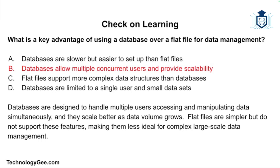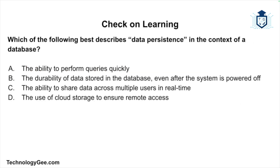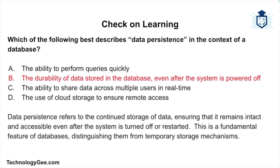Final question: which of the following best describes data persistence in the context of a database? Is it the ability to perform queries quickly, the durability of data stored in the database even after the system is powered off, the ability to share data across multiple users in real time, or the use of cloud storage to ensure remote access? The correct answer is the durability of data stored in the database even after the system is powered off. Data persistence refers to the continued storage of data, ensuring it remains intact and accessible even after the system is turned off or restarted — a fundamental feature of databases distinguishing them from temporary storage mechanisms.